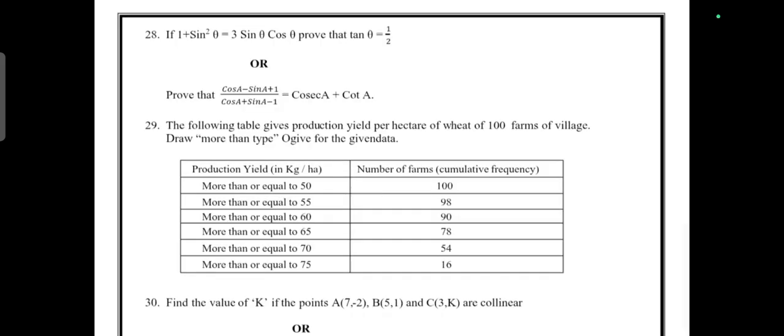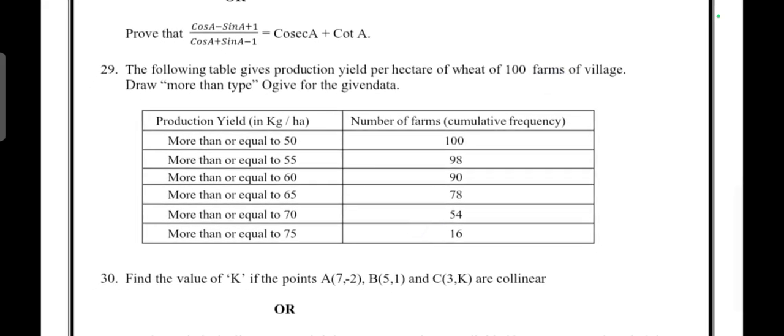If 1 + sin²θ = 3sinθ cosθ, prove that tanθ = 1 or 1/2. OR prove that (cosA - sinA + 1) / (cosA + sinA - 1) = cosecA + cotA. The following table gives the production yield per hectare of wheat of 100 farms of a village.